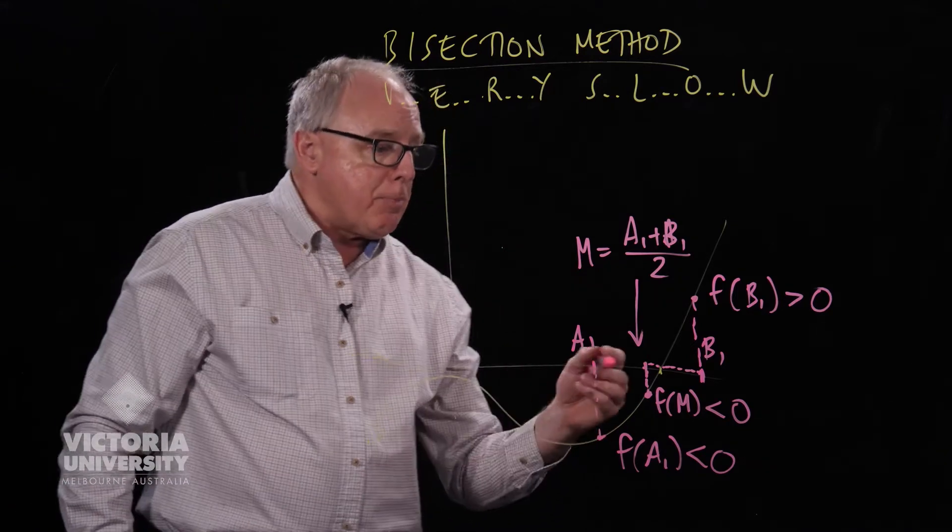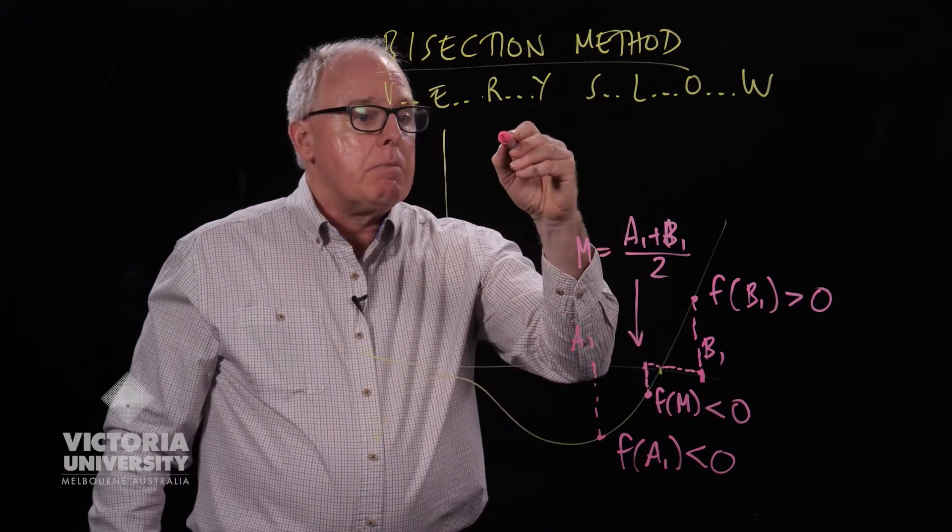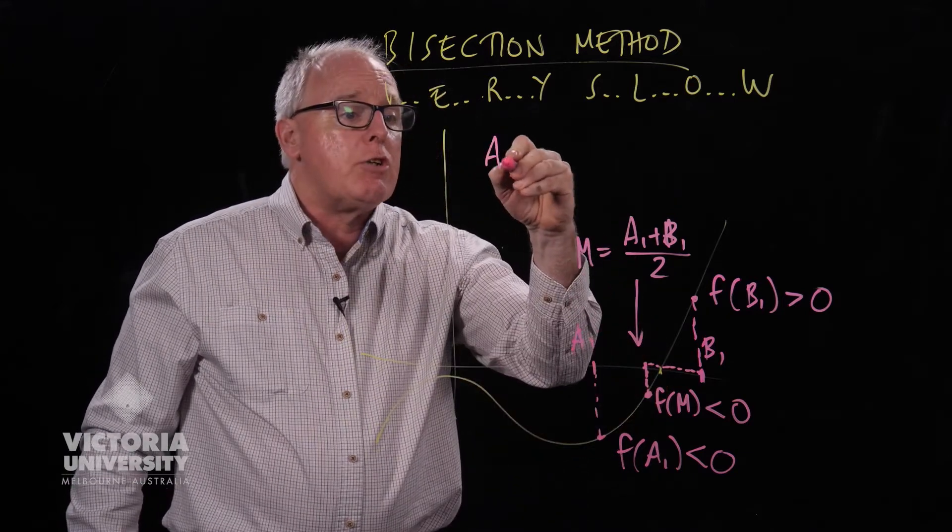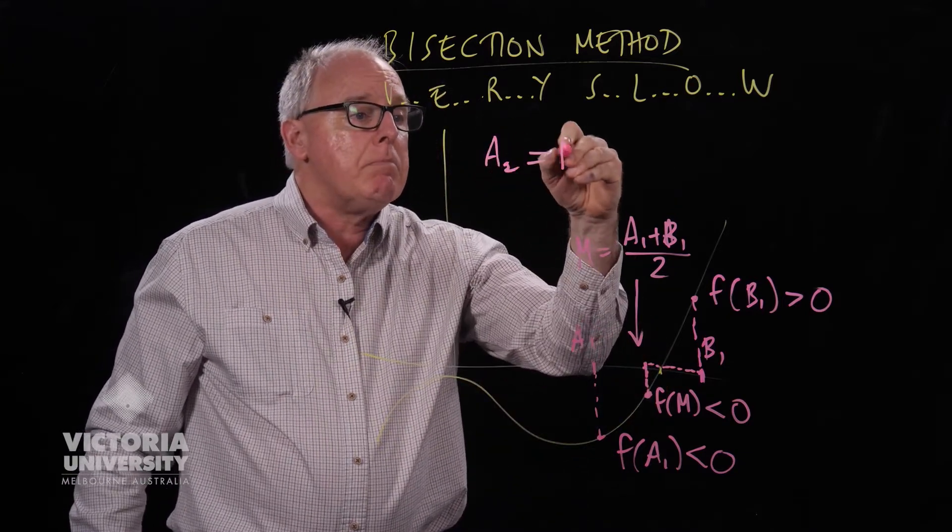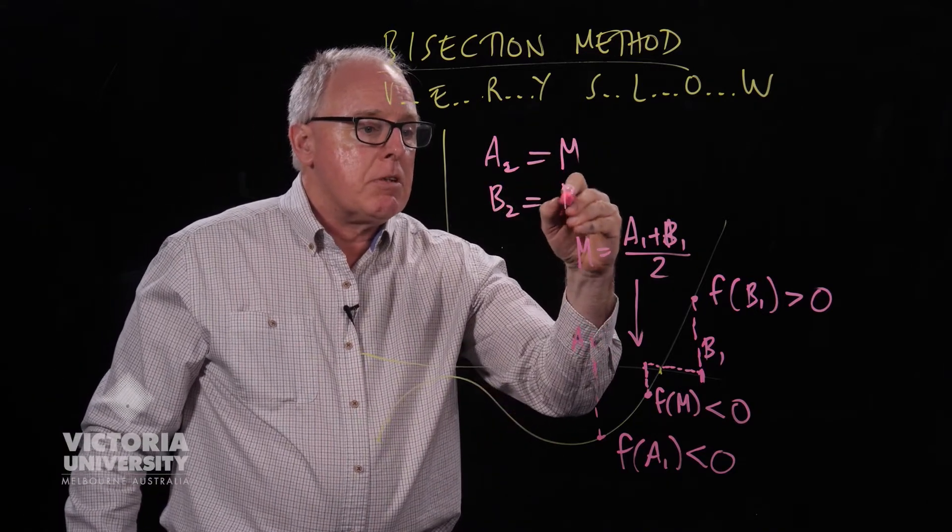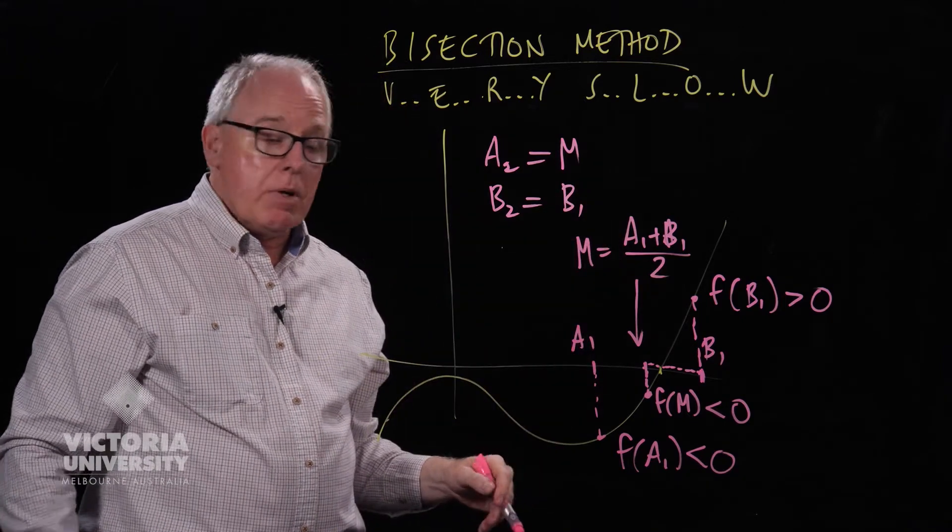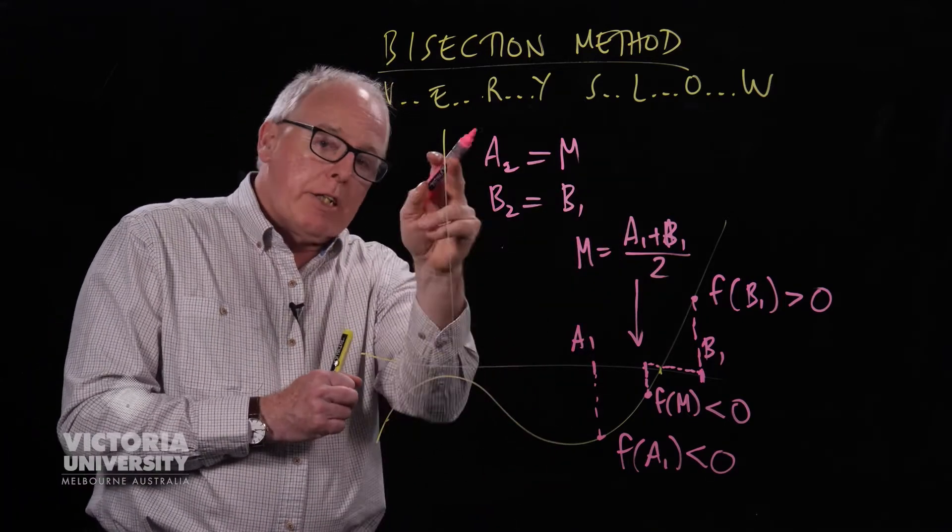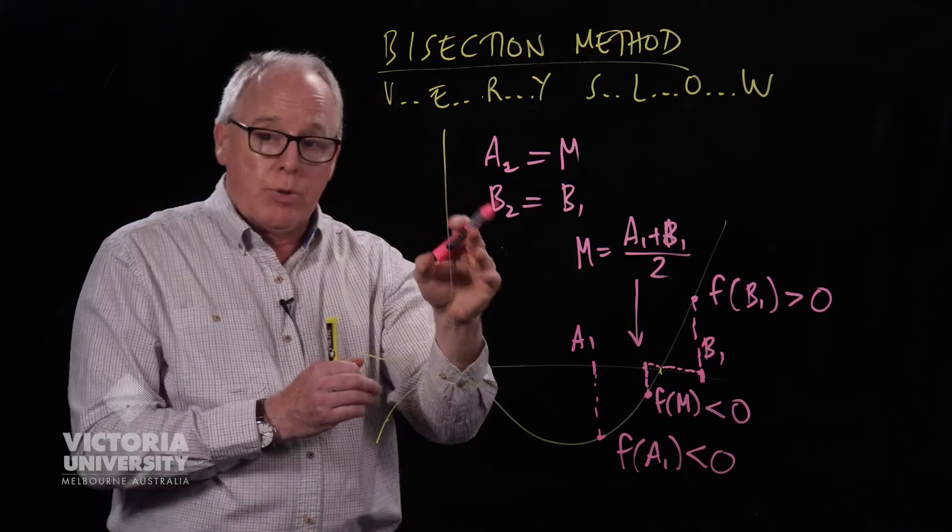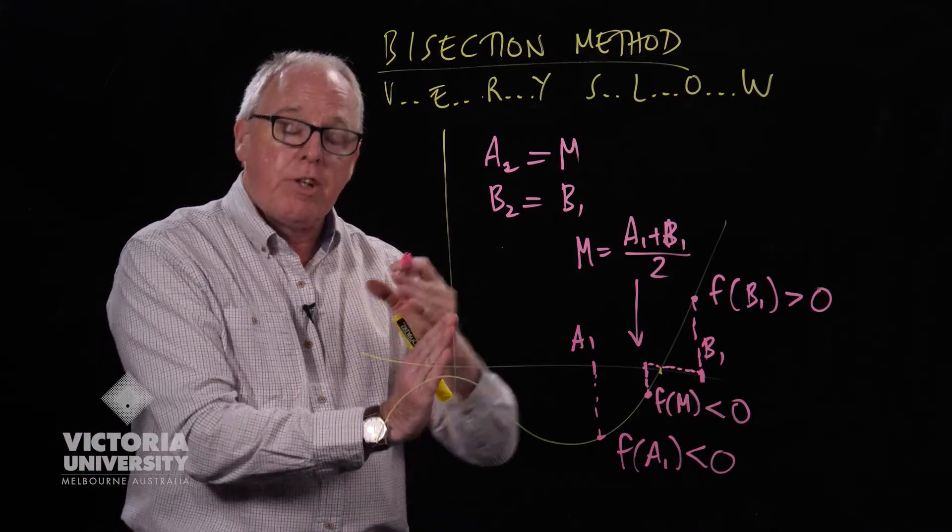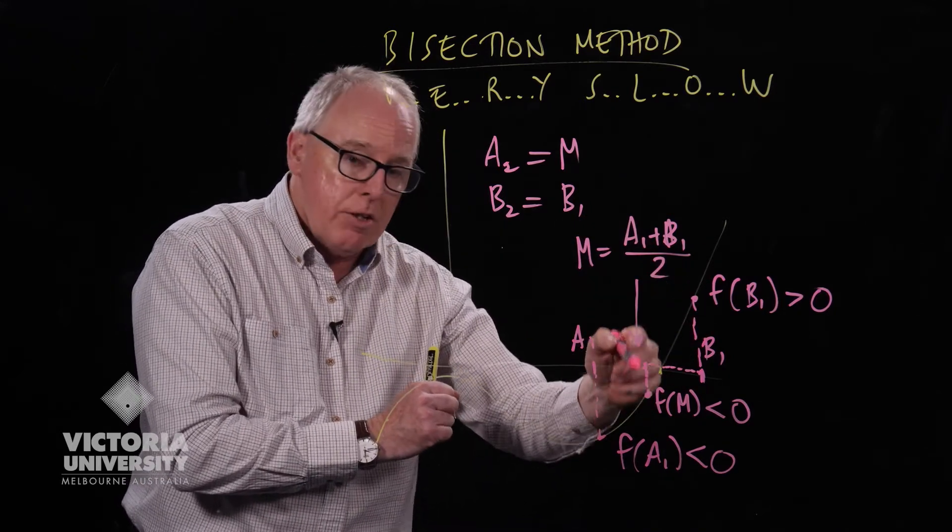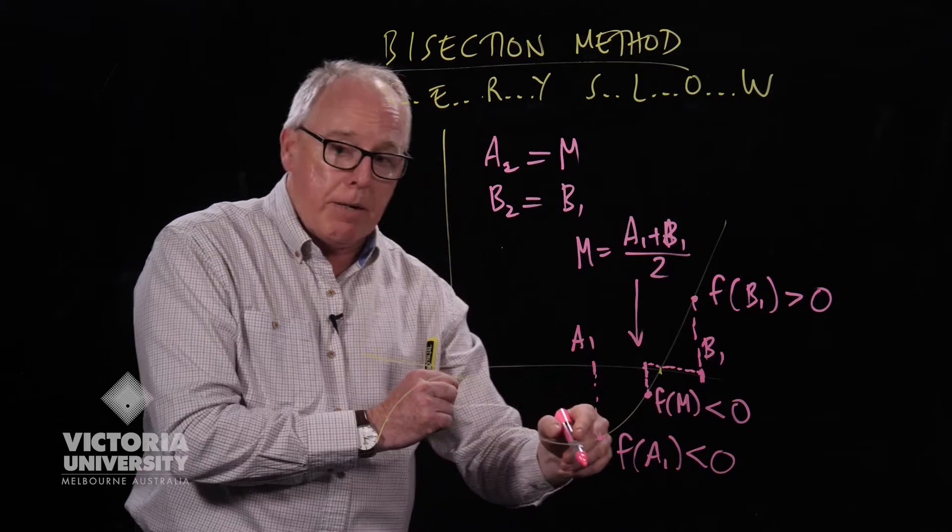So we update this so our next value, the value which is negative, our a2 value is m and the b2 value is the standard b value. So we simply update a1 and a2 to ensure, a1, a2 and b2, to ensure that one of them is always negative and the other one always positive, depending on the value of f of m.